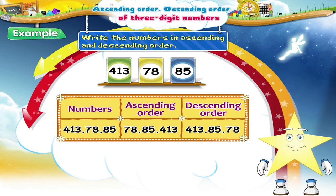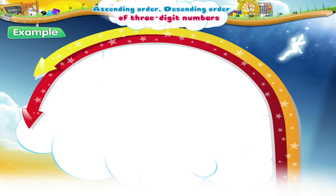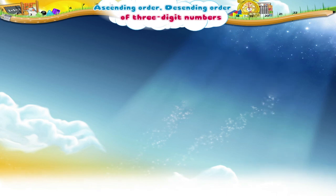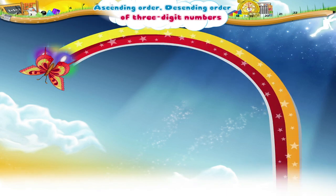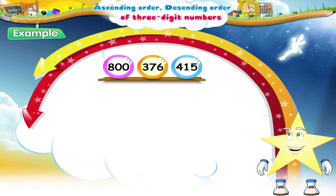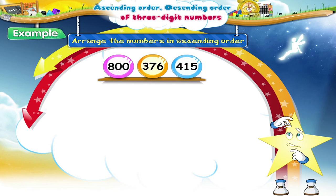You are very smart, Starry! Look at these numbered balls. Arrange them in the ascending order of numbers. What happened, Starry? You seem to need some help!